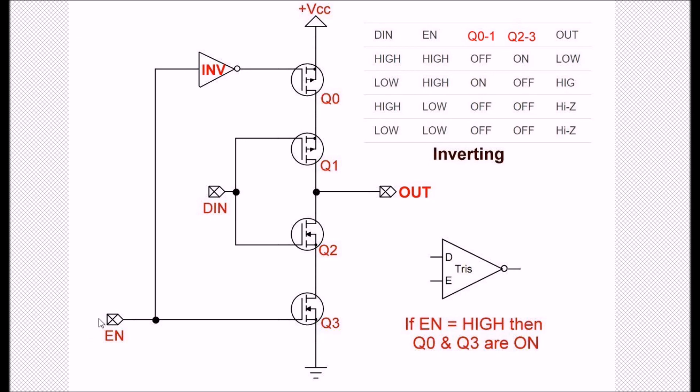Let's make enable high again. Of course, that's going to turn on Q0 and Q3. A high in on DIN is going to turn off Q1 and turn on Q2, and thus it's going to go low. Again, if you look at here, a high in with enable high: Q0 and 1 are off, Q2 and 3 are on, the output's going to be low.